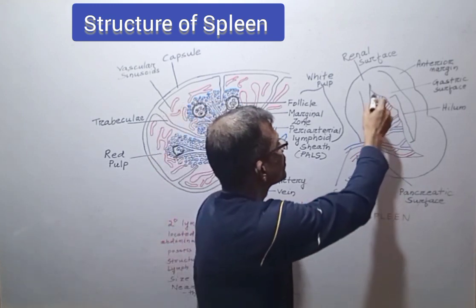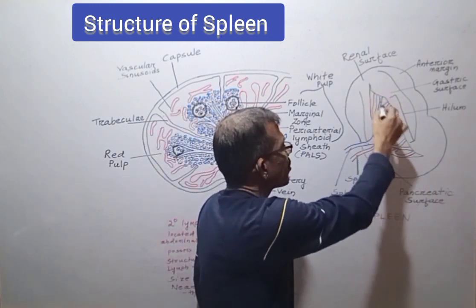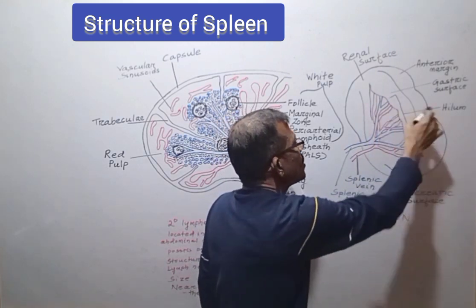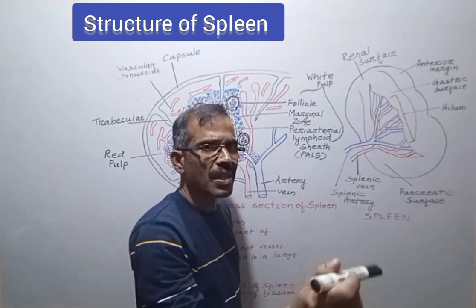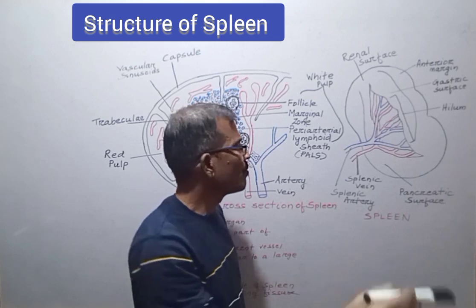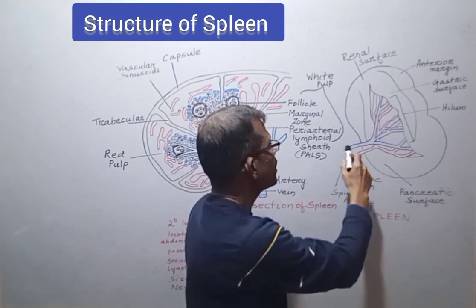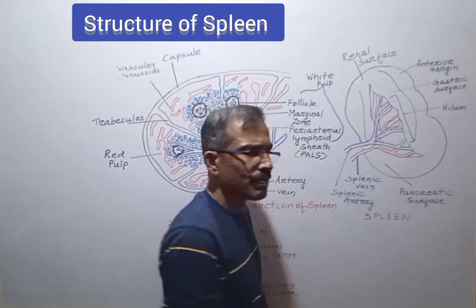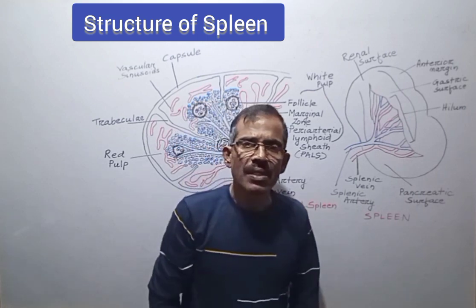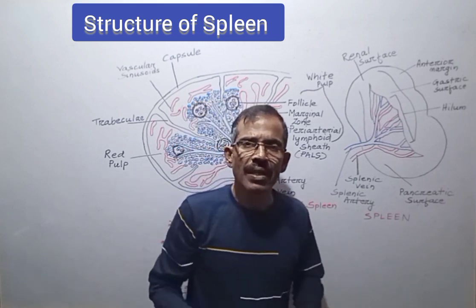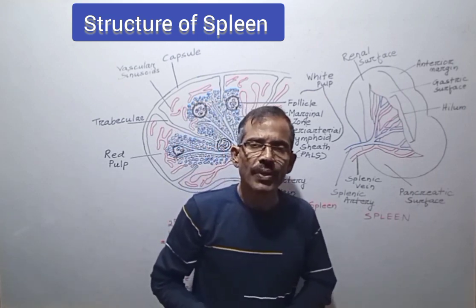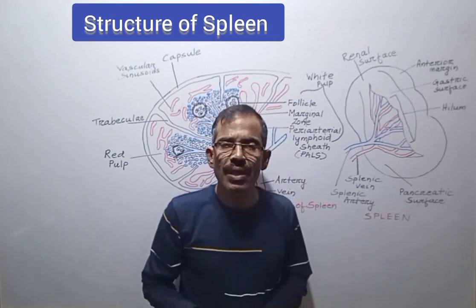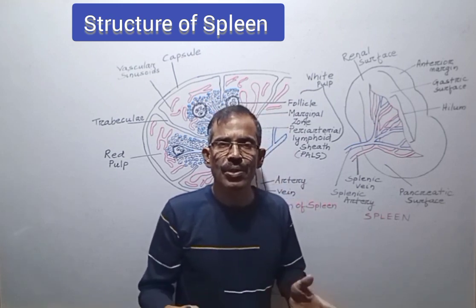Near the middle, there is a long fissure called hilum, which is the point of insertion of the splenic artery and splenic vein. Spleen is deep red in color. It has direct communication with the main arterial circulation.